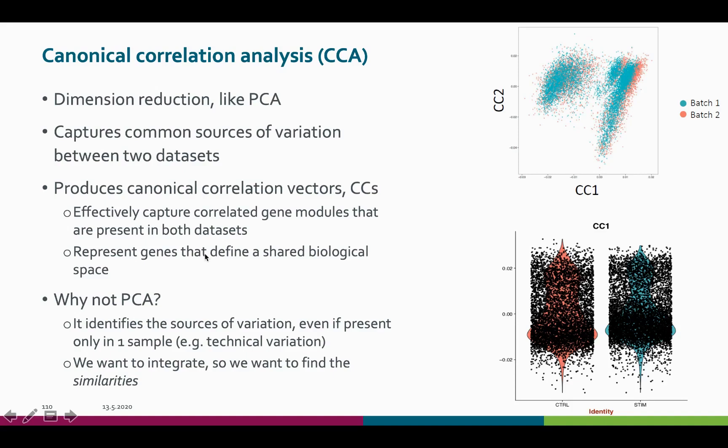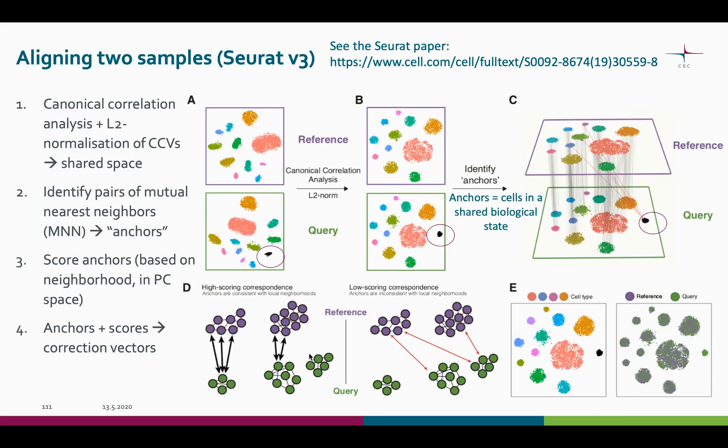So unlike with PCA, which was identifying sources of variation, we now look for similarities with CCA. These similarities help us to integrate or align our datasets. Let's take a closer look at the aligning process used by the Seurat version three tools. These pictures are borrowed from the publication by Seurat developers, which is linked here.